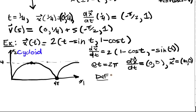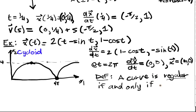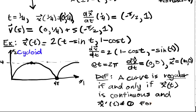So definition: a curve is regular if and only if x of t is continuous - that is, I can take limits and everything's fine - and x prime does not equal the 0 vector for all t.